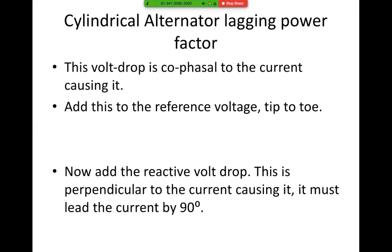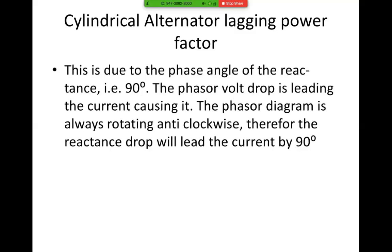Now add the reactive voltage drop. This is perpendicular to the current causing it and it must lead the current by 90 degrees. This is due to the phase angle of the reactance being 90 degrees — the phasor voltage drop is leading the current causing it. The phasor diagram is always rotating anti-clockwise; therefore the reactance drop will lead the current by 90 degrees.